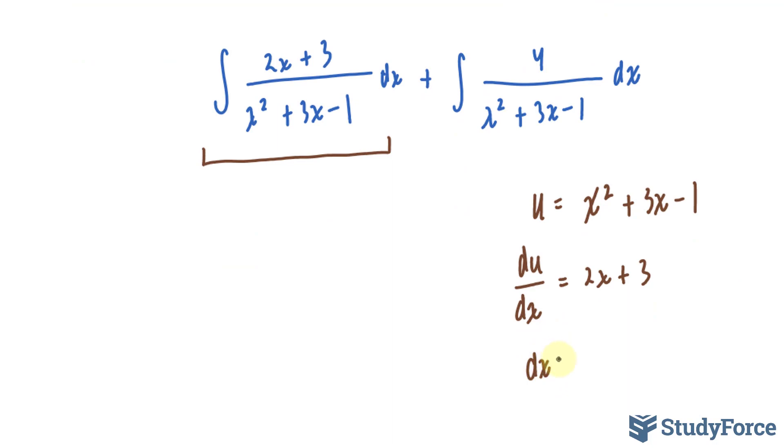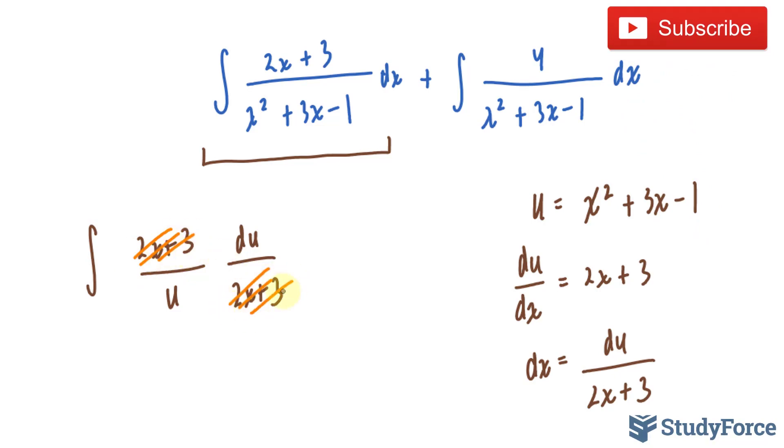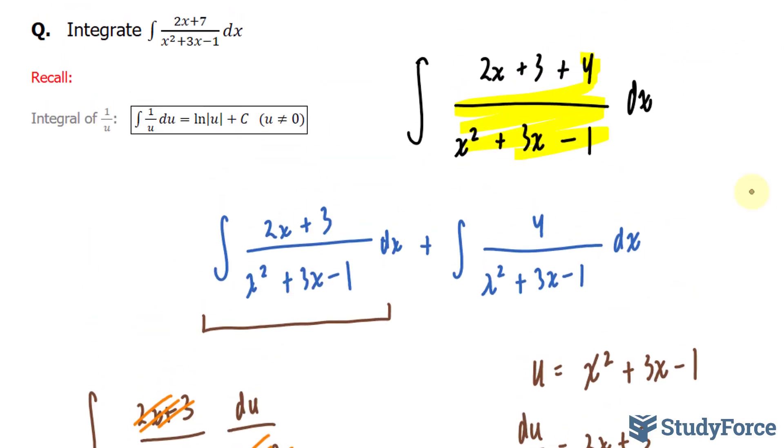And now I'll solve for dx, which gives us du over 2x plus 3. That being said, I now have the integral of 2x plus 3 over u, and instead of dx, I have du over 2x plus 3. This expression and this expression cancel out, leaving us with the integral of 1 over u du. And for that, I can use this relationship, where the integral of 1 over u is equal to ln the absolute of u plus c.